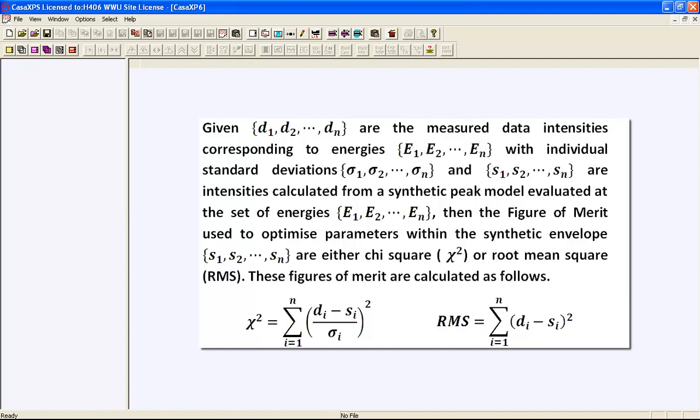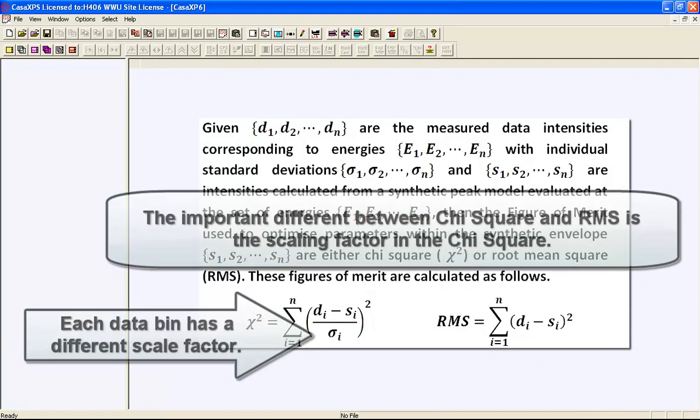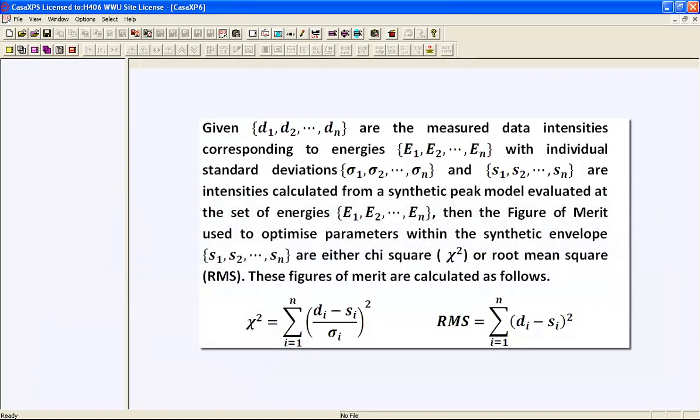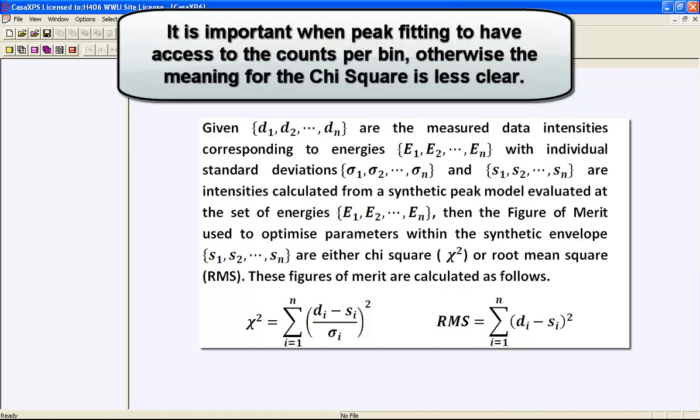The other solution is based on chi-square, where you have the same difference as in the RMS but the difference is this scaling value here which is the standard deviation in the data bins. For XPS data that's pulse counted, you expect sigma to be the square root of the counts per bin, and therefore if you have a peak maximum you will scale the peak maximum to a greater extent than if you have a low background. As a consequence, you tend to underestimate the influence of the peak maximum at the expense of fitting to the background.